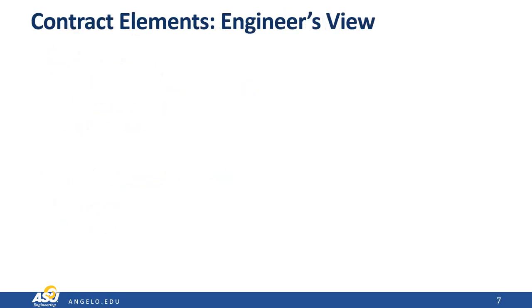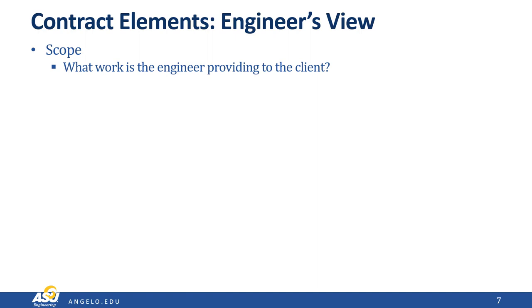Now let's get to the engineer's point of view. We can have a legally valid contract and it can still be totally useless to the engineer. It's only useful if it has certain elements. The first is a very clear scope — what is the work the engineer is going to provide for the client? You've got to clearly be able to tell the client what you're going to do for them. This includes the deliverables: are you giving them a report, a design, a recommendation? What specifically are you providing to the client?